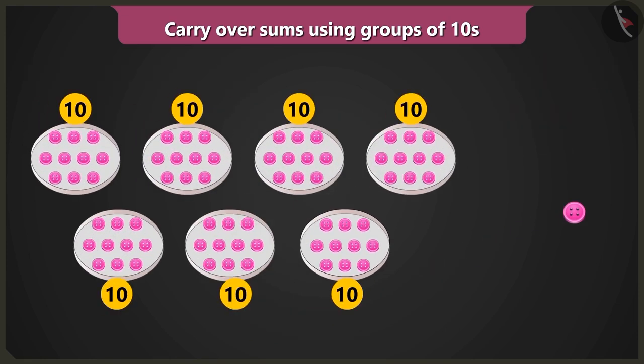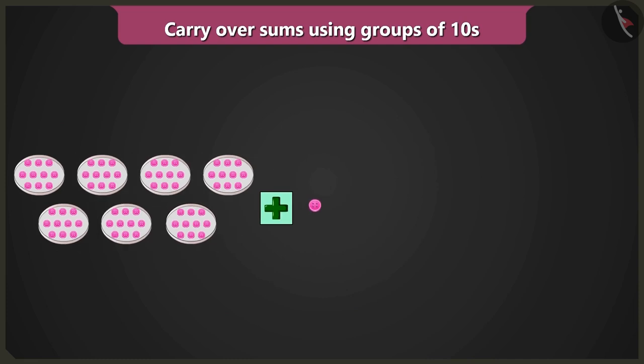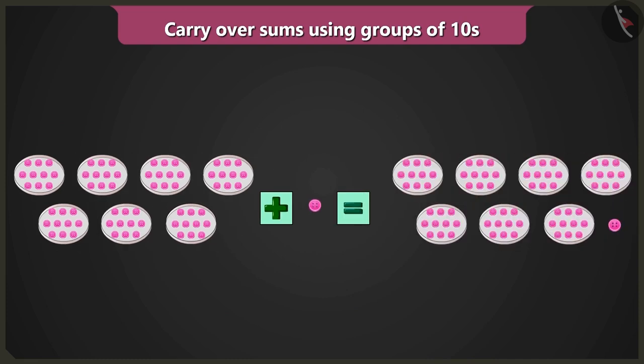Now here, there are groups of ten buttons each in one, two, three, four, five, six, seven plates that make seventy buttons, and add one loose button to these will make seventy-one buttons.